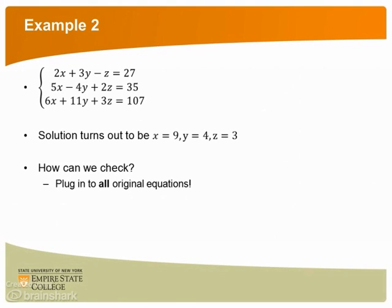What if we have a system of three equations in three unknowns? The second example was just such a system. We worked through the problem, and we think our answer is x equals 9, y equals 4, and z equals 3. To check, we have to plug into all three original equations.